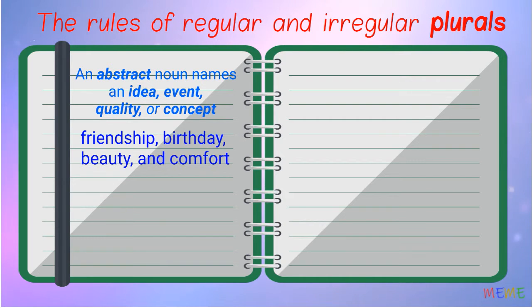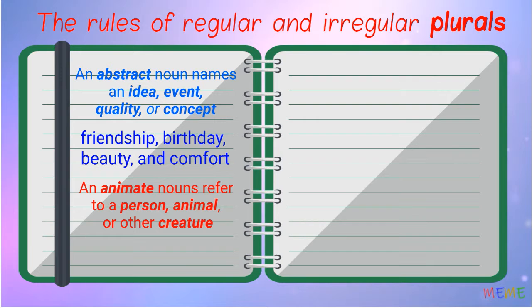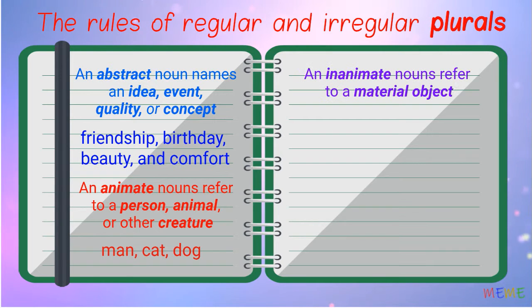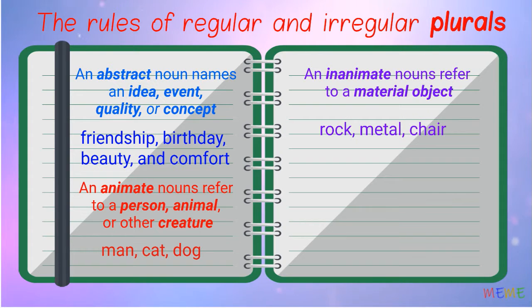2. Animate nouns refer to a person, animal, or other creature. For example: man, cat, dog. 3. Inanimate nouns refer to a material object. For example: rock, metal, chair.